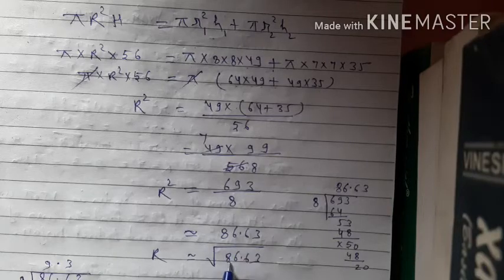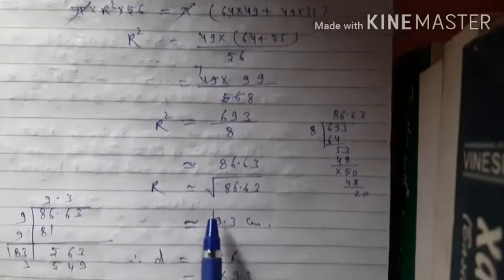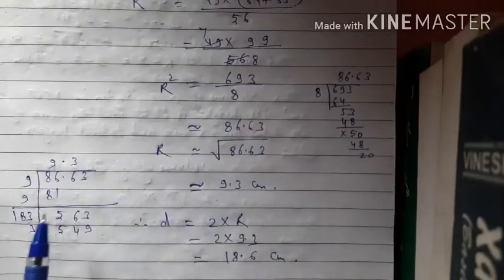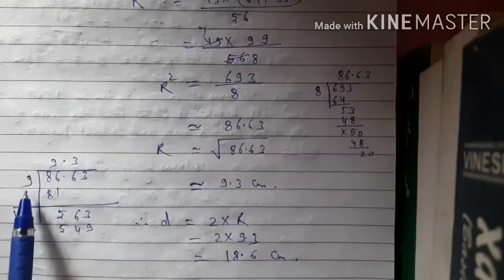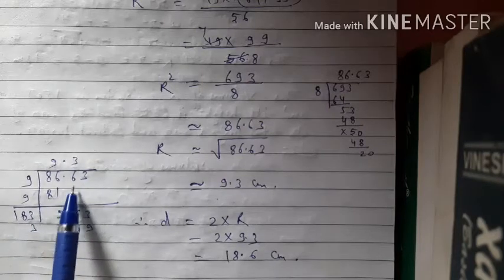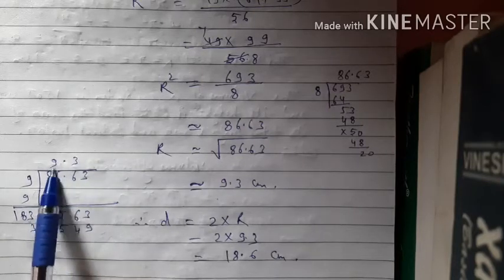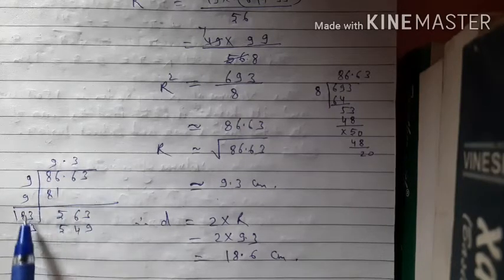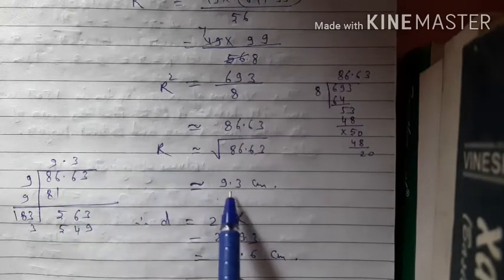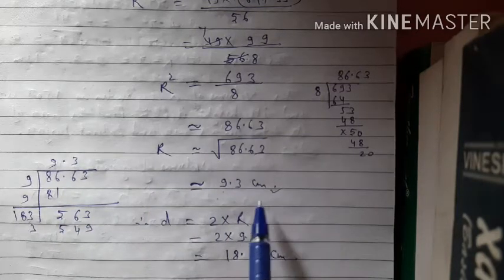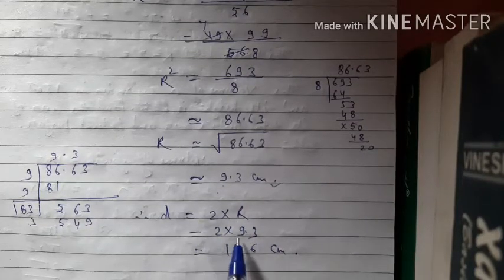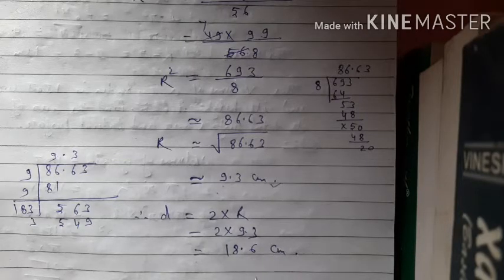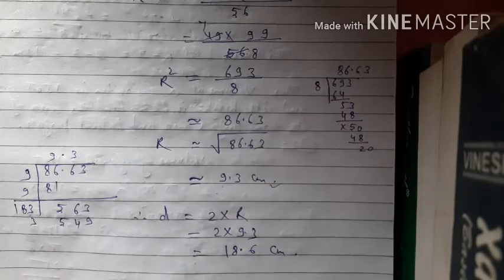So R = √86.63. Finding the square root: grouping gives 9² = 81, remainder leads to approximately 9.3. So radius R ≈ 9.3 cm (approximate). Therefore diameter = 2 × R = 2 × 9.3 = 18.6 cm. The diameter of the new cylinder is 18.6 cm.